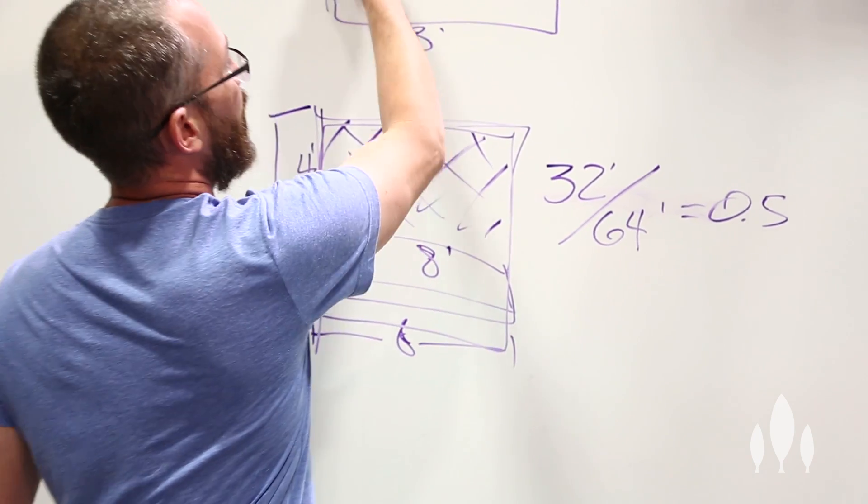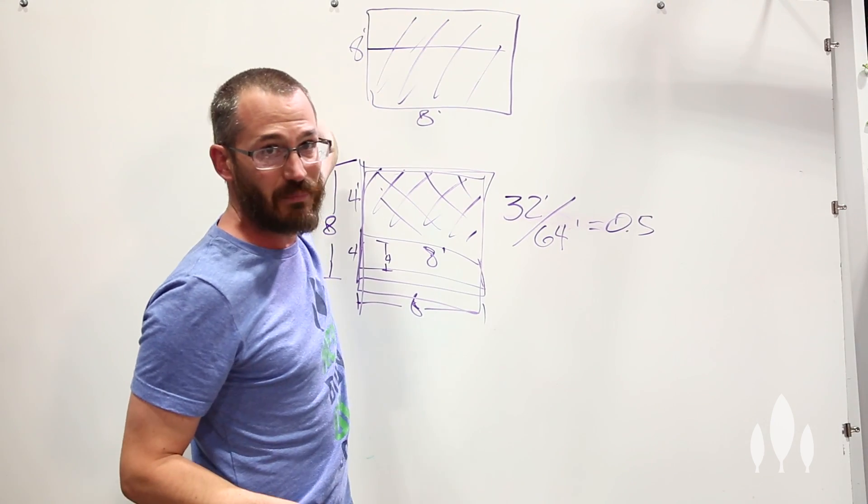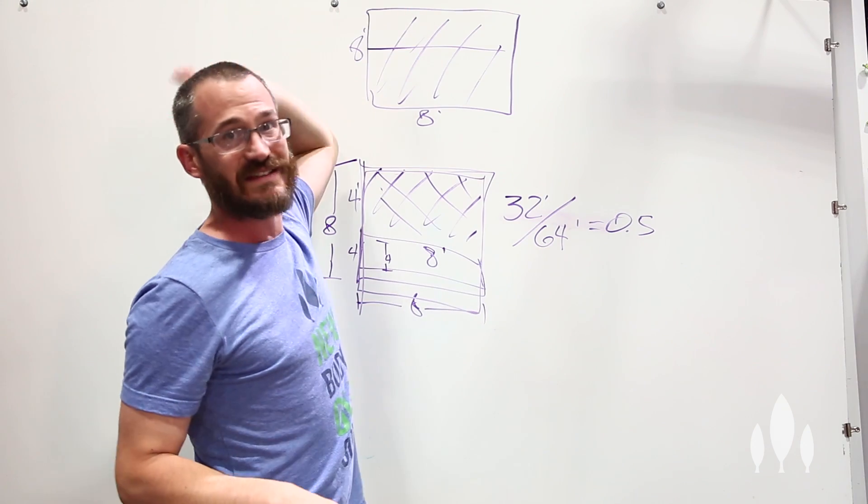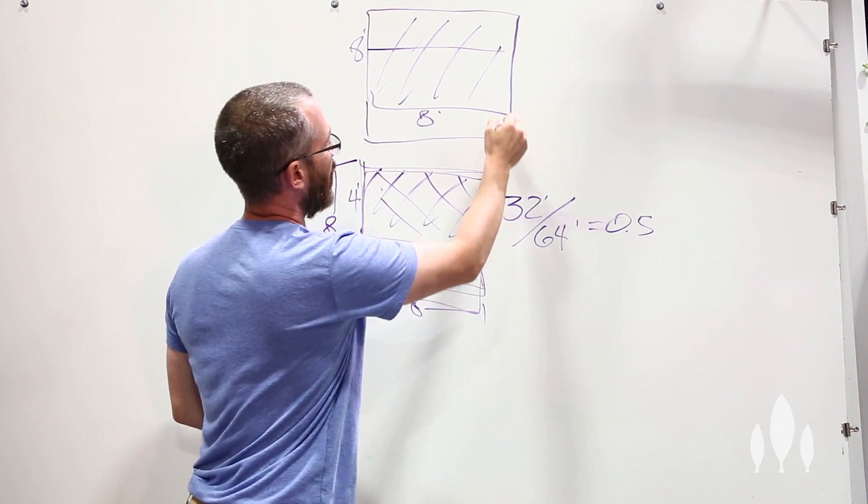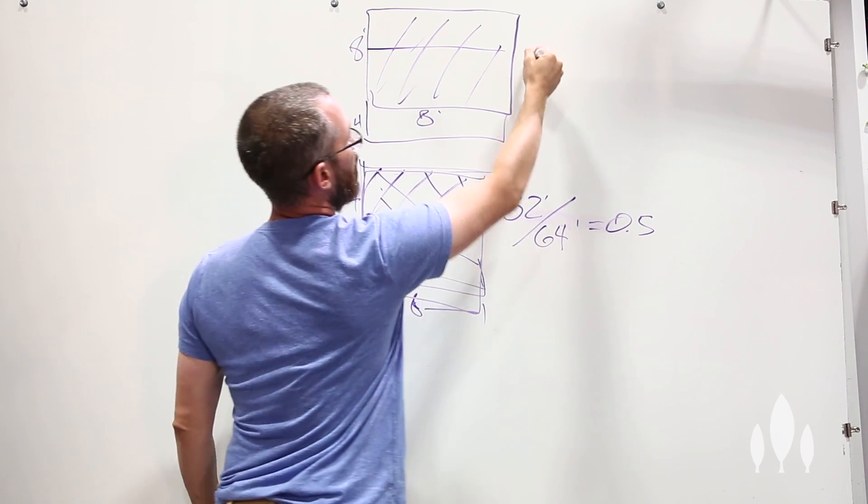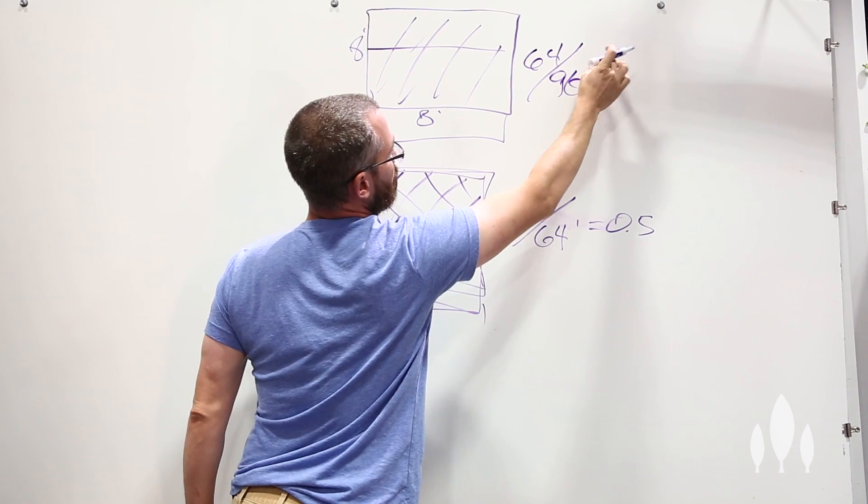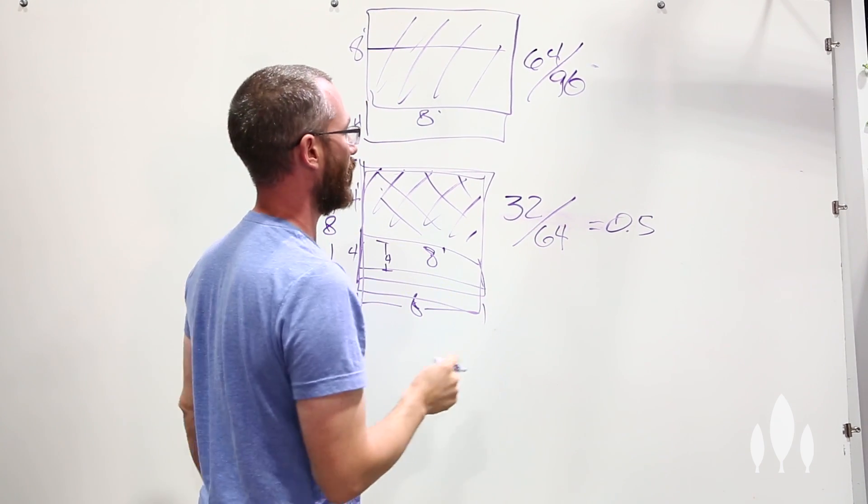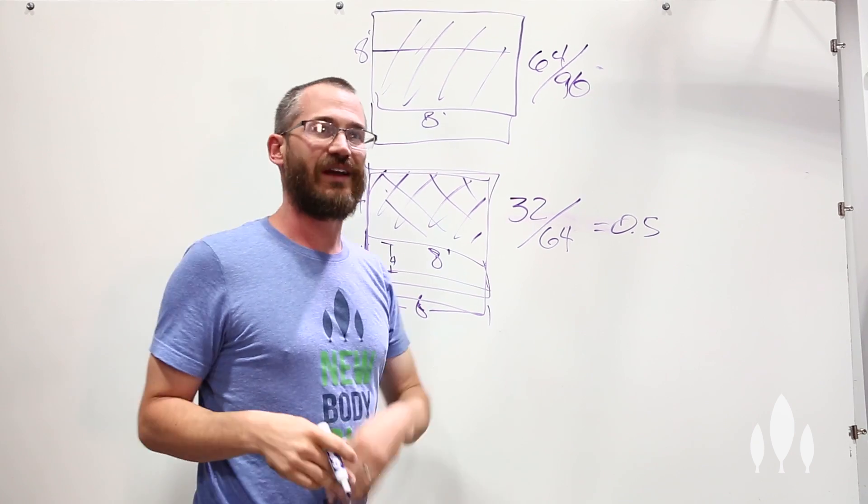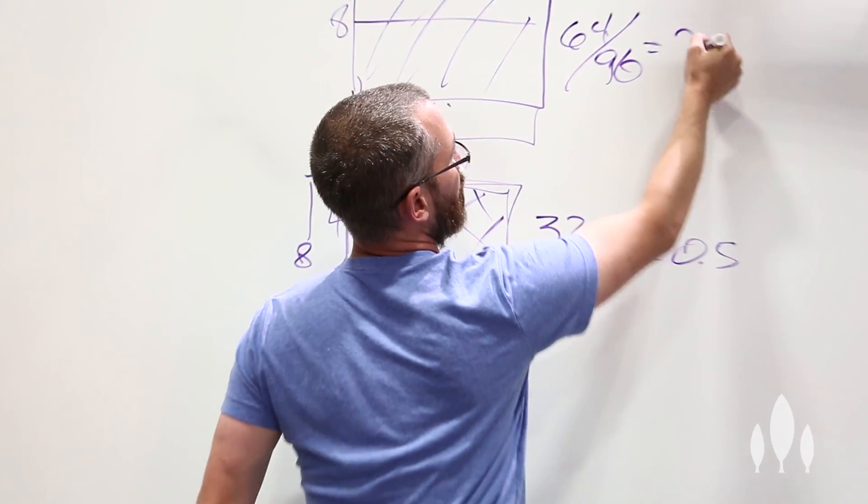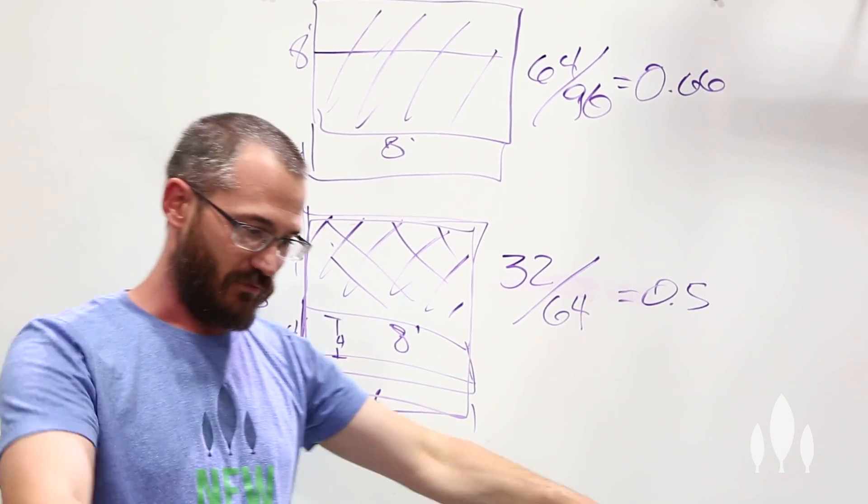Now up here things get a little bit better because we've doubled this up. There are all sorts of other problems that come with having an eight by eight growing area - CO2 depletion in the middle, access to plants in the middle, the ability to monitor pests, disease, and take care of the plants in the middle of this mass. But we do get a little bit better space use efficiency. With our four foot aisle, we're looking at 64 square feet of growing area out of 96 square feet of total floor space. This ratio is 0.66, we're a little bit better, at two thirds of that total floor space.